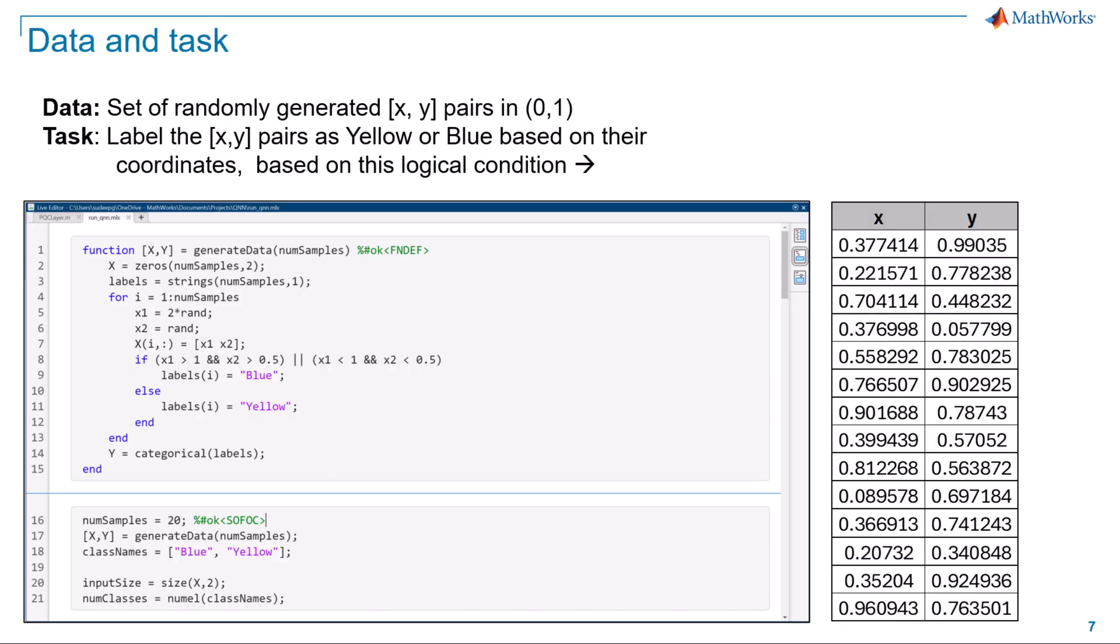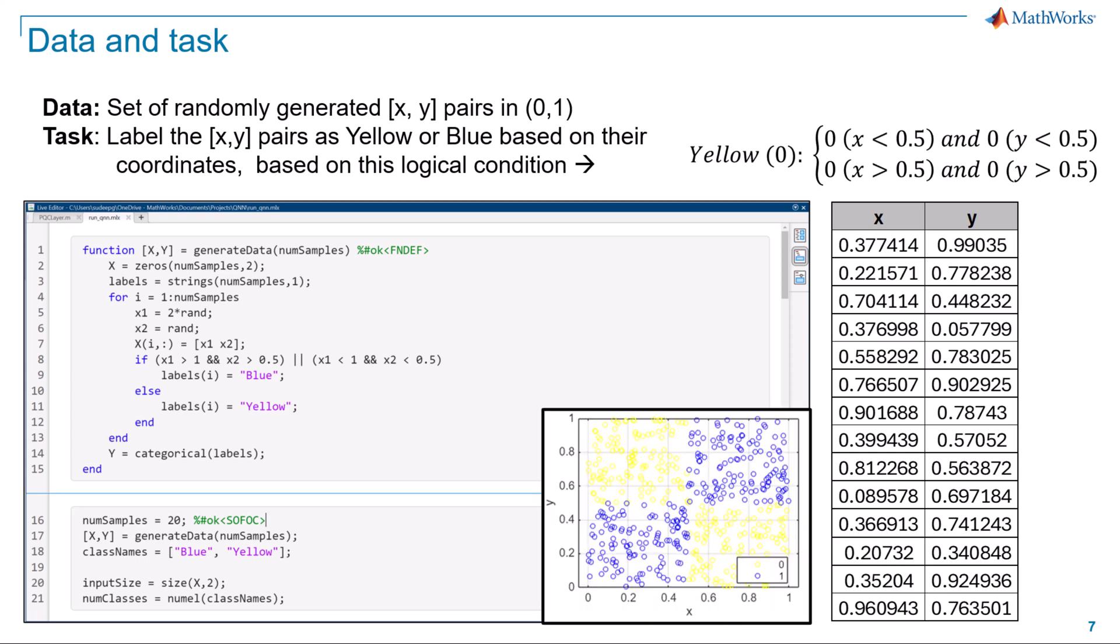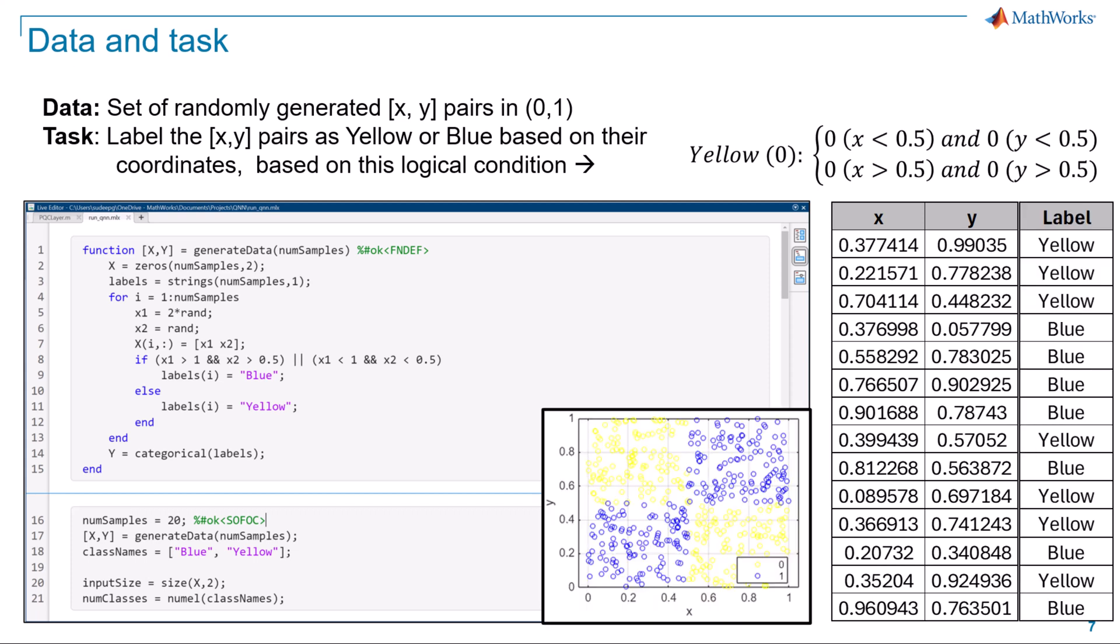Let us begin with the data and task at hand. Below are the lines of code that generate random X, Y coordinate pairs for our example. We will label each point based on the coordinates using this specified condition. For instance, if a point meets this condition, we will label it yellow. Otherwise, it will be labeled blue. Here is what the generated data looks like.